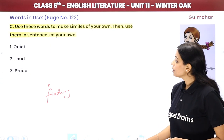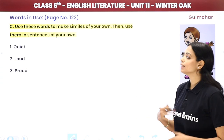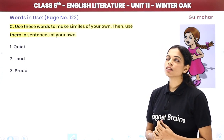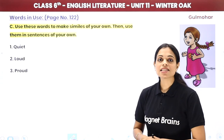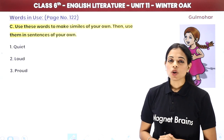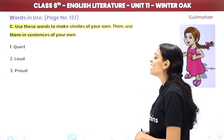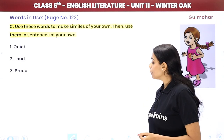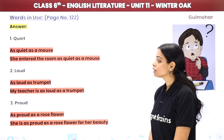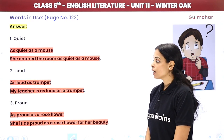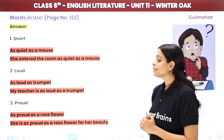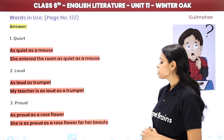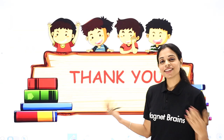Now use given words to make similes of your own and write sentences. Quiet — 'as quiet as a mouse': 'She entered the room as quiet as a mouse.' Loud — 'as loud as a trumpet': 'My teacher is as loud as a trumpet.' Proud — 'as proud as a rose flower': 'She is as proud as a rose flower for her beauty.' And with that, we are done with this chapter!